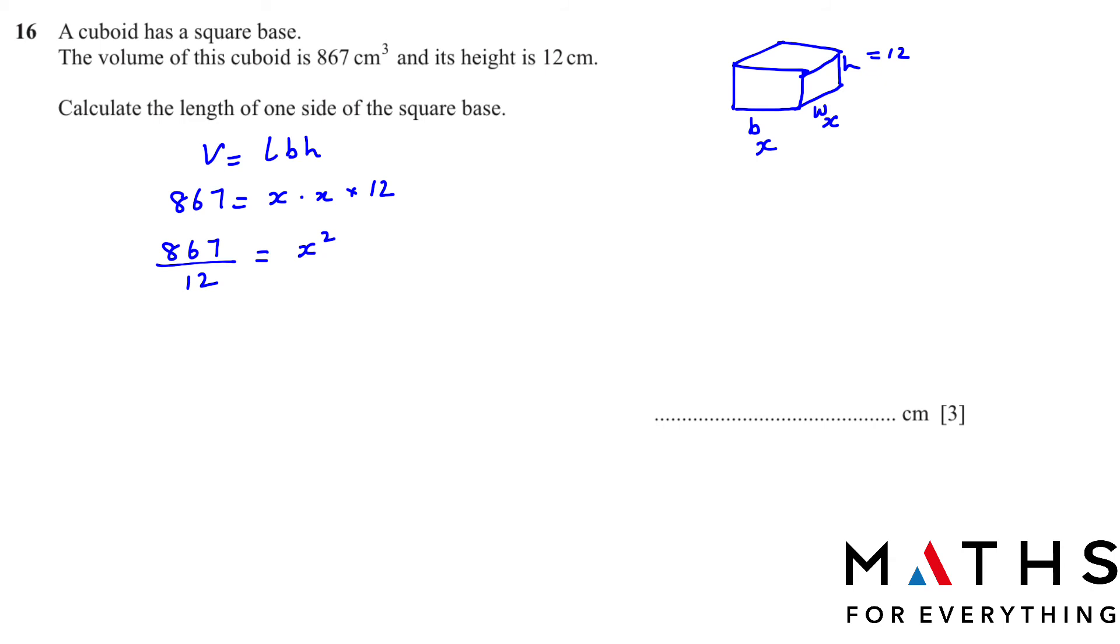Whenever you have a square and you want to find the value of x, we square root the numbers. Normally we put a plus and minus, but because length, width, dimensions cannot be negative, we'll only take the positive one. And this will give us the answer: x is equal to 8.5.